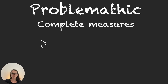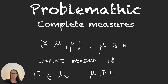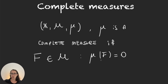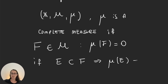So we have a measure space (X, M) with a sigma algebra M and a measure mu defined on the sigma algebra. We say that mu is a complete measure if whenever we grab a set F that is in our sigma algebra such that mu of F is 0 — so we grab a set of measure 0 — and we have another set E, a subset of F, then the measure of E is also equal to 0.